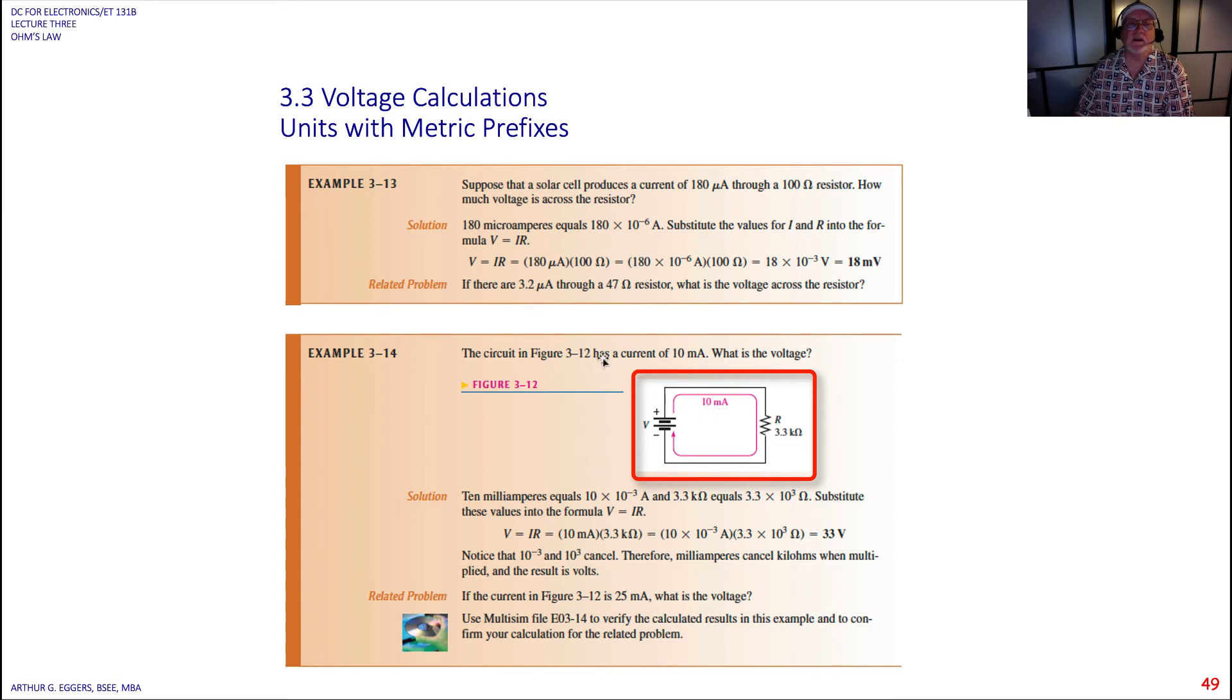In this circuit, we've got 10 milliamps of current being pushed through and 3.3 thousand, 3.3 k ohm resistance. We want to know then with 10 milliamps and 3.3 k ohms, what is the source voltage going to be?